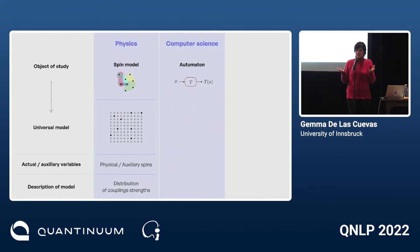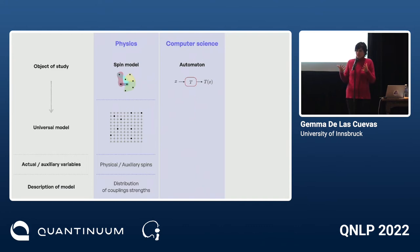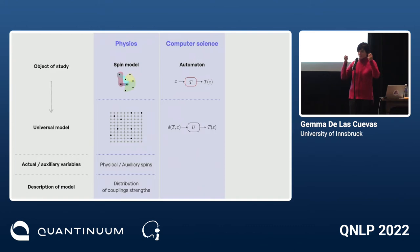A priori, you have two things which seem very different. One is the program T — the set of transition rules in a Turing machine — and the other is the data: which strings you feed the program, which question you're asking, the so-called instance. If that were all, for every different algorithm you would need to build a new machine. But there's the fundamental notion of a universal Turing machine, which washes out this distinction, because the program is now fixed.